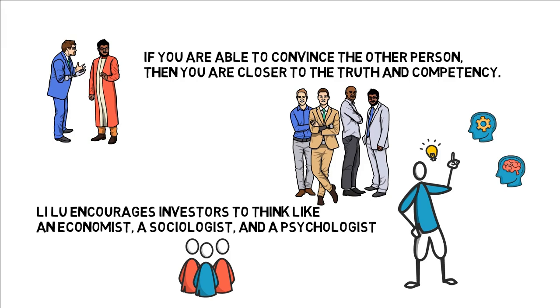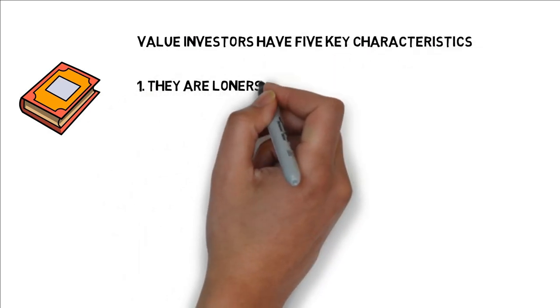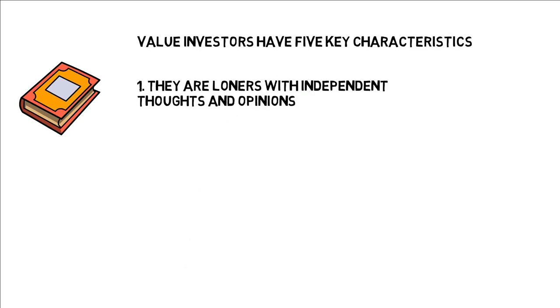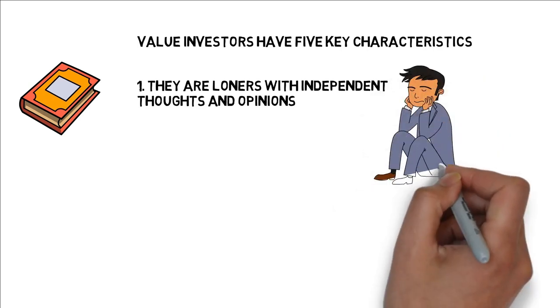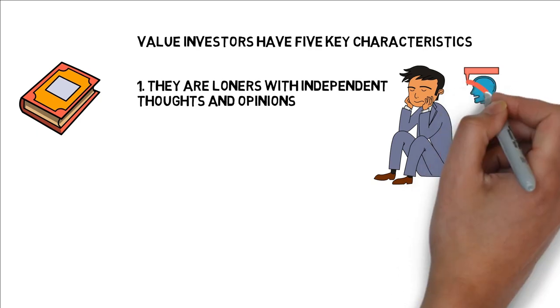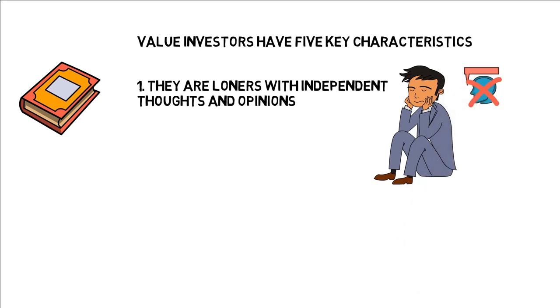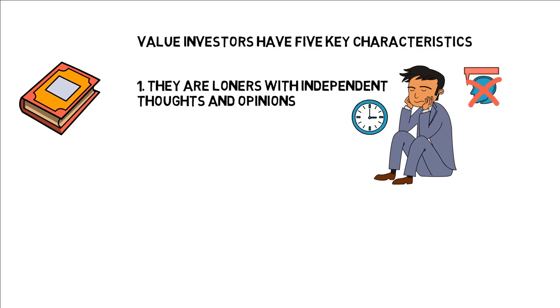Finally, we will end this video by covering some additional gems from Leeloo's investing. In the book, Leeloo had many thoughts on the notion of temperament. He suggests that value investors have five key characteristics. They are loners with independent thoughts and opinions. People who pay less attention to popular trends and opinions are usually better value investors. Lou believes that investors' circle of competence rarely overlap, so it's unnecessary to over-communicate. Since value investors aren't believers in diversification, they wouldn't need to invest in too many ventures. Also, the less time that we spend talking with others about the new hot thing, the more time we have to research a few companies to invest in.